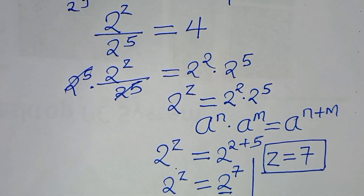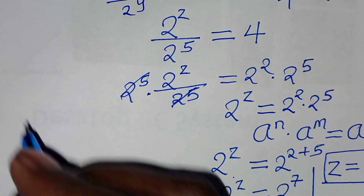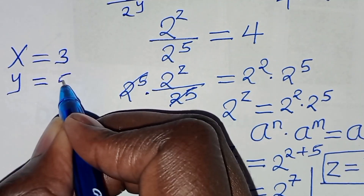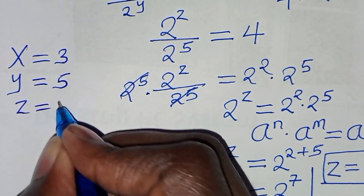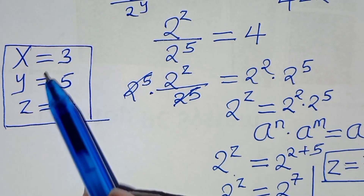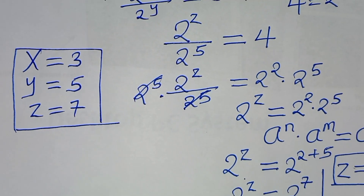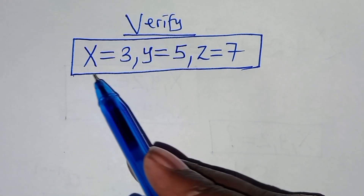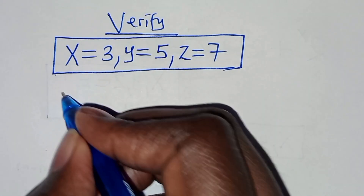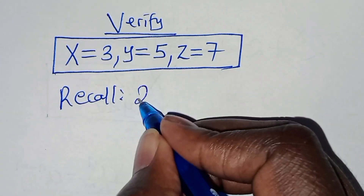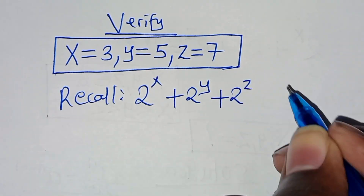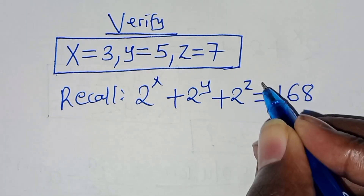So now we have all the values: x equals 3, y equals 5, and z equals 7. The next step is to verify that these values satisfy the original equation. Substituting into 2 to the power of x plus 2 to the power of y plus 2 to the power of z, this should give us 168.